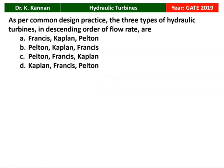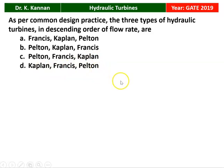The next question from the GATE 2019 question paper: As per common design practice, the 3 types of hydraulic turbines in descending order with respect to flow rate — which is correct? With respect to flow rate: at high flow rate, we prefer Kaplan turbine; at medium flow rate, we prefer Francis turbine; and at low flow rate, we prefer Pelton turbine. So the correct option is option D: Kaplan, Francis, Pelton.